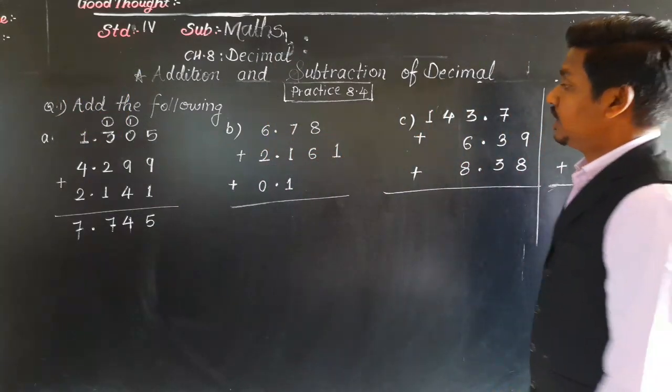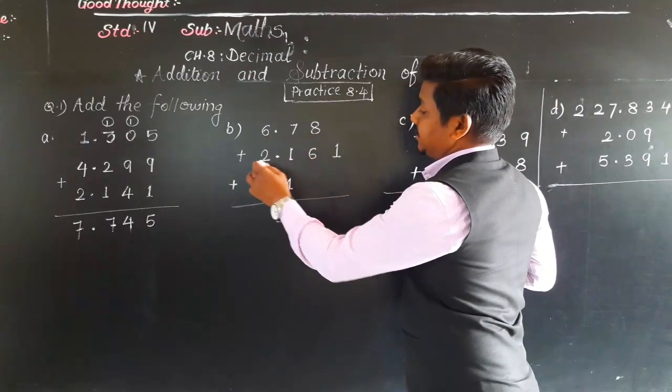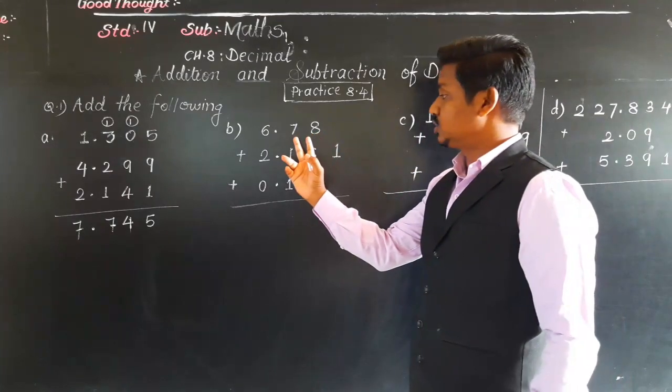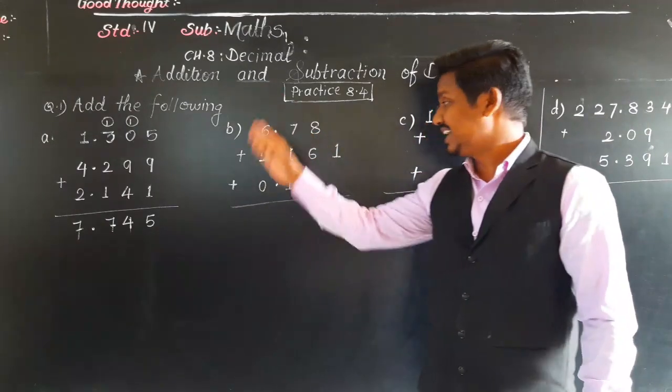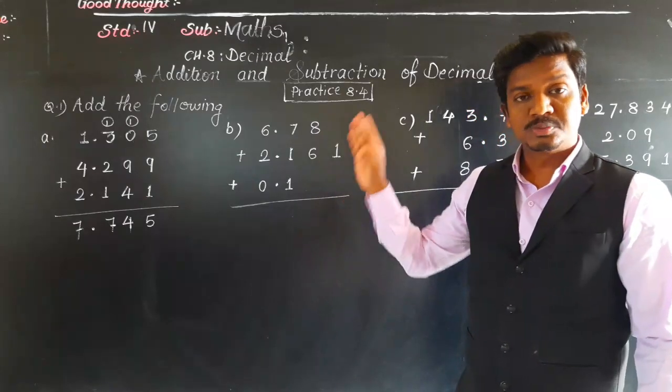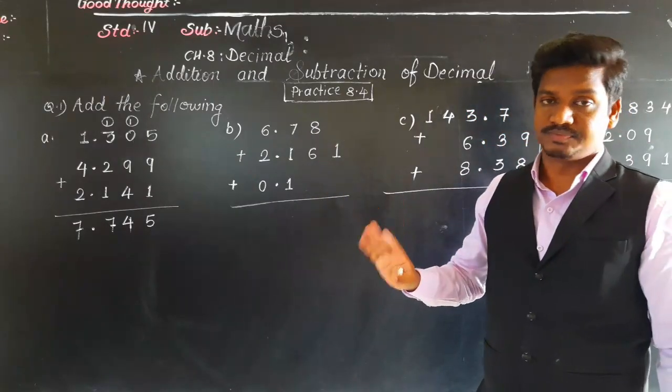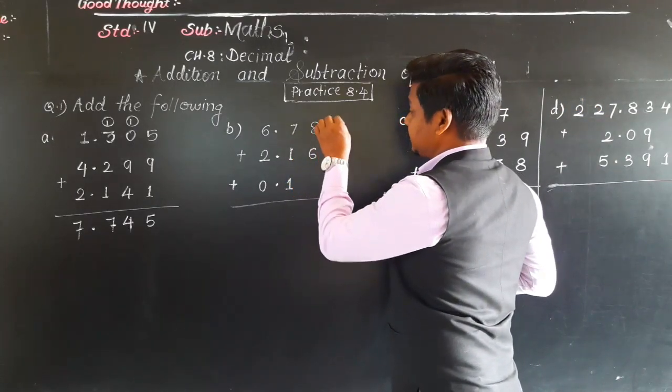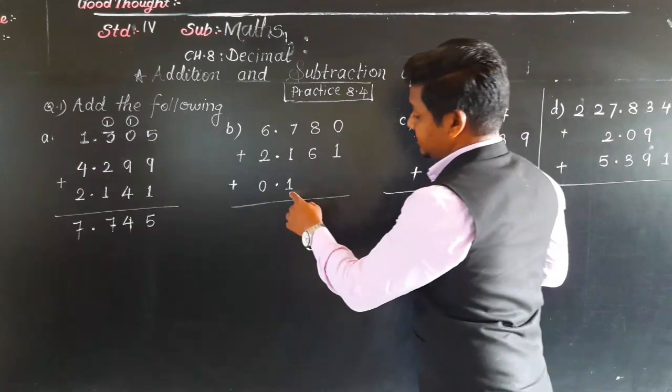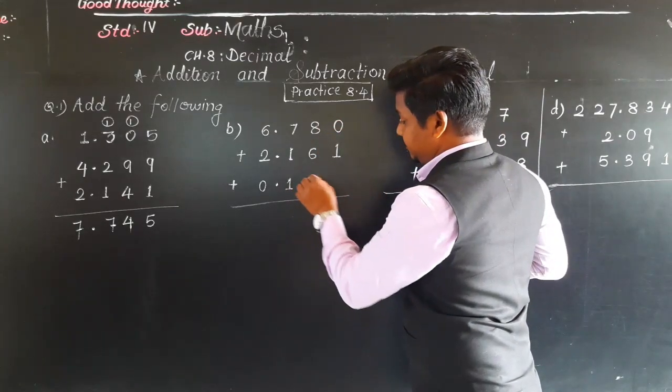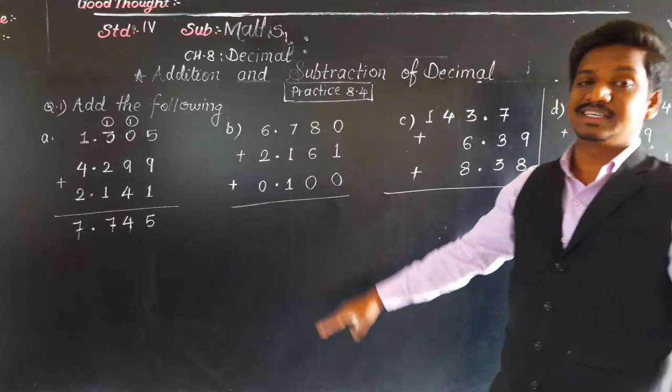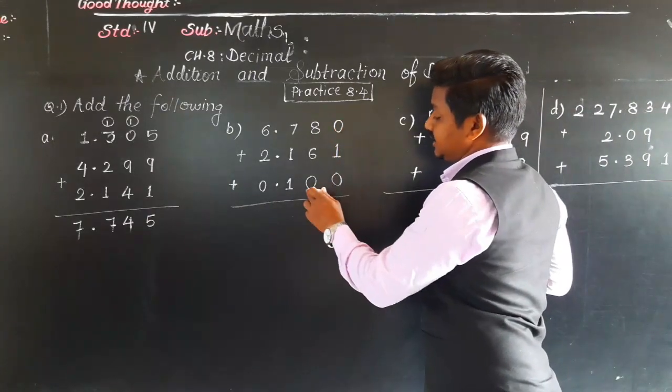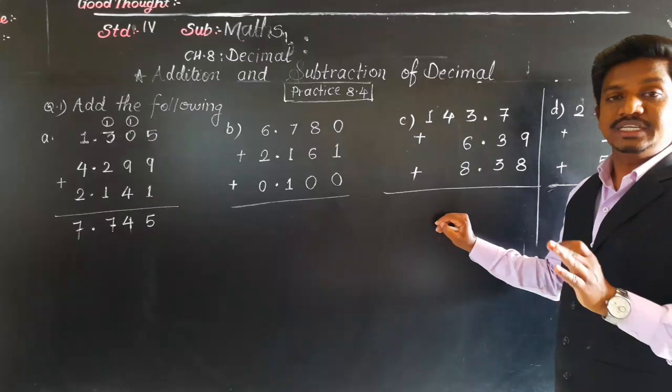Next: 6.78 plus 2.761 plus 0.1. Now here see, decimal places are 2 here, 3 here, 1 here. So what we will do? They are unlike decimals, so by putting zeros at the end we will make them equal - we will make them like. See, now here maximum 3 decimal places are there. Here 2 are there, so let's add zero here. Here there is only 1 decimal place, so we will add two zeros. Now in all the decimals there are 3 decimal places. So let's add it. Why we have done this? This makes our addition easy.